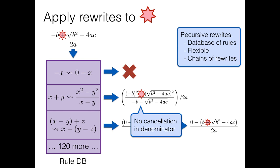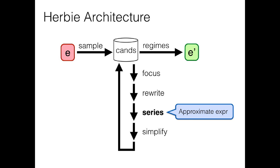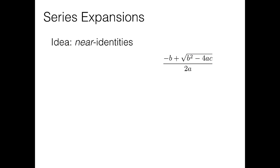So rewrites are one way of generating candidate expressions. Another is to approximate the operator of interest using a series expansion. And the idea here is basically to use not mathematical identities, but mathematical near identities. For example, the square root of 1 minus x is approximately equal to 1 minus x over 2, at least if x is small. And if we use that as a rewrite rule, we get this other expression, which it turns out can improve the accuracy after simplification.